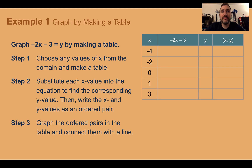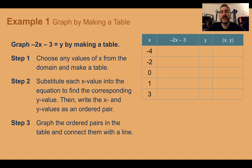Example 1: Graph by making a table. Graph negative 2x minus 3 equals y by making a table. Here we have three steps. First, we're going to choose any values of x from the domain and make a table. Then, we're going to plug each value of x into our equation to figure out y. Then, we're going to take our x and our newly found y to make a coordinate. Last, we're going to graph those coordinates and connect them with a line. If we did it correctly, our points should make a straight line.